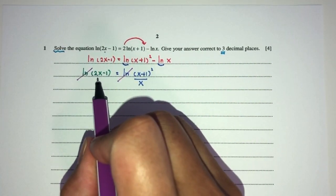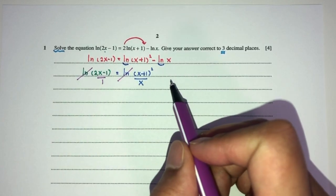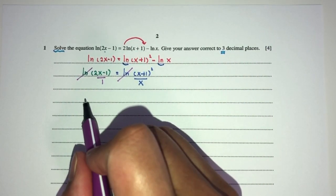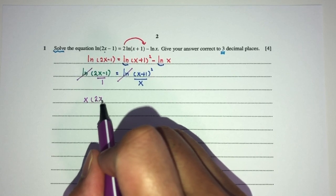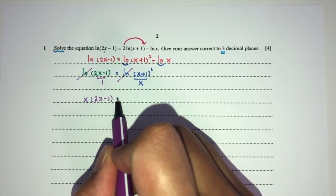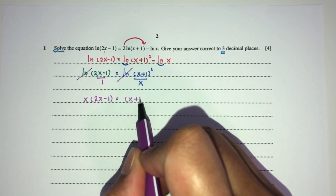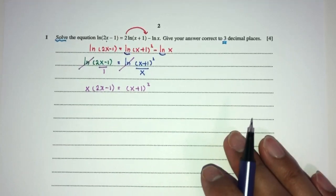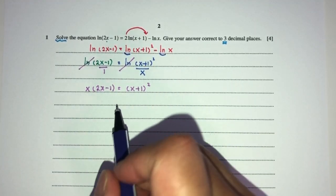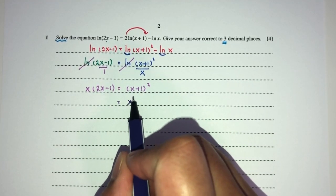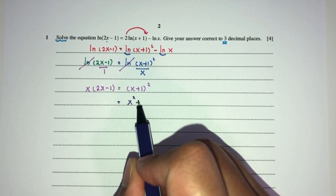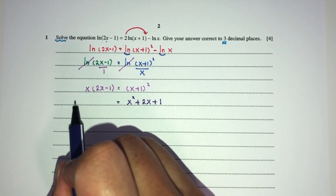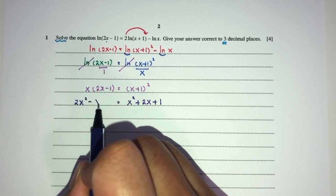Now we realize we have fraction equal to fraction, so we can just cross multiply. You will have x times (2x-1) is equal to (x+1) squared. Now take your time to expand this one first. You will have x squared plus 2x plus 1, and this will be 2x squared minus x.